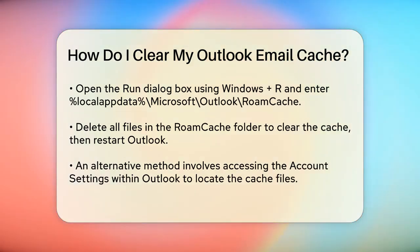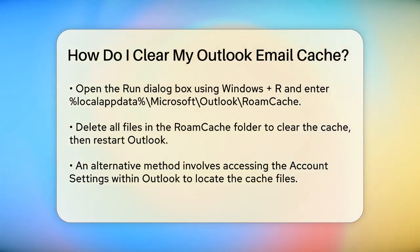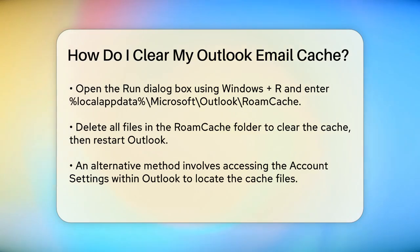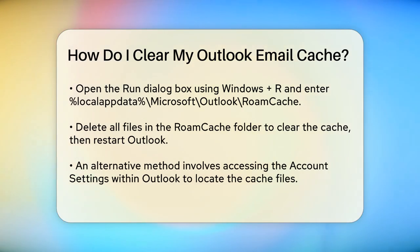Alternative Method for Classic Outlook. Another way to clear the cache in Classic Outlook is through the application itself. Open Outlook, go to File, then Account Settings, Account Settings. In the Account Settings dialog box, switch to the Data Files tab, select your account, and click the Open File Location button. This will open File Explorer, showing the folder where your profile's data is stored, including the cache files.